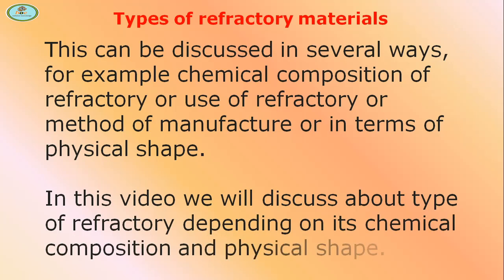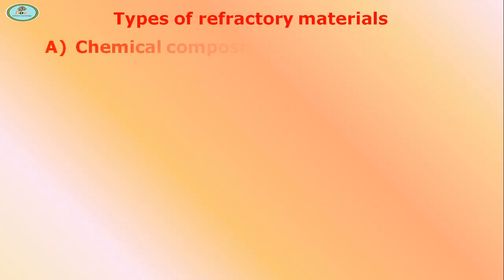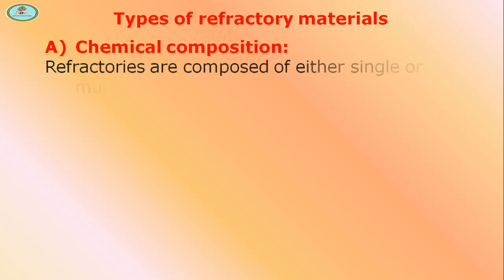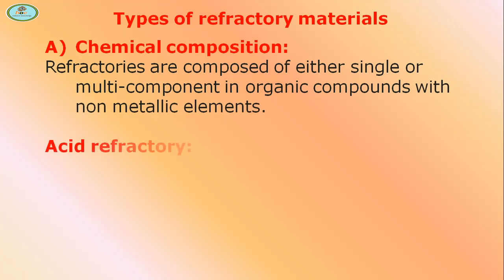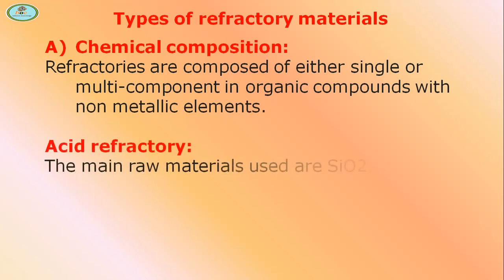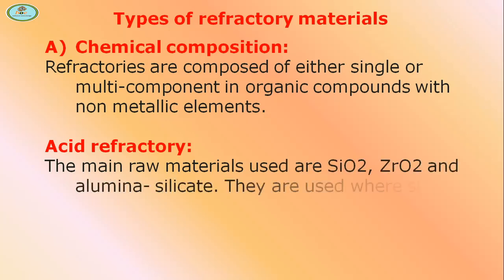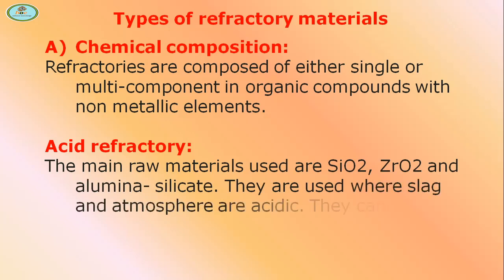In this video we will discuss types of refractories depending on chemical composition and physical shape. Chemically, refractories are composed of either single or multi-component inorganic compounds with non-metallic elements. Acid refractories — the main raw materials used are SiO2, ZrO2, and alumina silicate. They are used where slag and atmosphere are acidic, and they cannot be used under basic conditions.